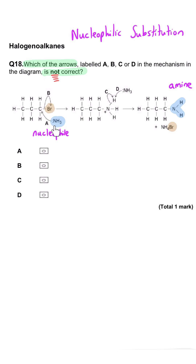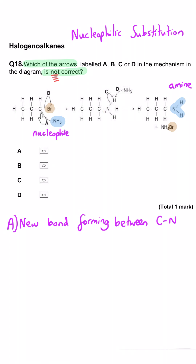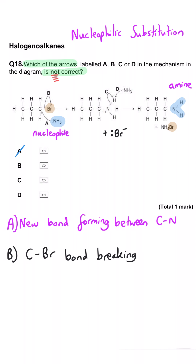Arrow A shows the formation of a new bond between the lone pair on the nitrogen and the electron-deficient carbon — that's a correct arrow. We also show the breaking of the carbon-to-bromine bond, ending up producing a Br⁻ with its own lone pair, and that's also correct.